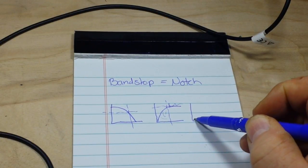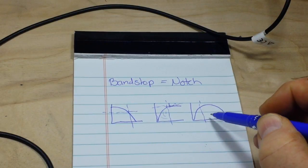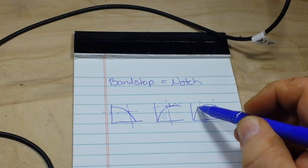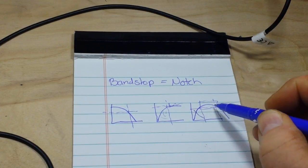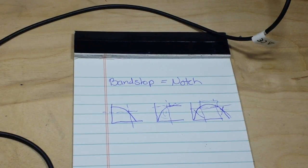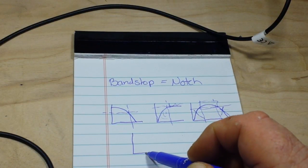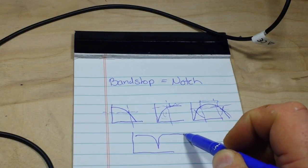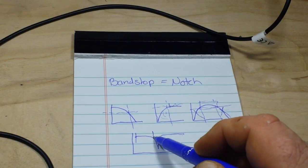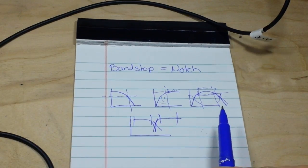And our bandstop, or our bandpass filter, just kind of works like this. All of this is passed. These are attenuated. And now we're going to do the bandstop filter, which looks kind of like this. Pass zone, pass zone, attenuation zone.